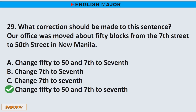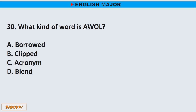Question number 30. What kind of word is 'AWOL'? A. Borrowed. B. Clipped. C. Acronym. D. Blend. The correct answer is letter C. Acronym.